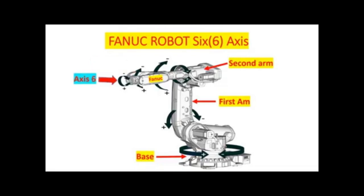Axis number six is the rest of the robot arm and it will rotate in circular motion and it is capable of rotating more than 360 degrees in rotation.